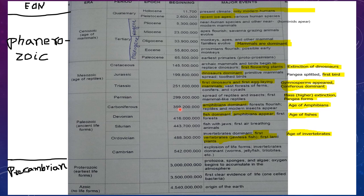Next is Cretaceous. In Cretaceous, archaic mammals and birds begin to replace dinosaurs. First flowering plants — that is angiosperms — appear, followed by the extinction of dinosaurs. You have to remember: first flowering plants and extinction of dinosaurs in Cretaceous.